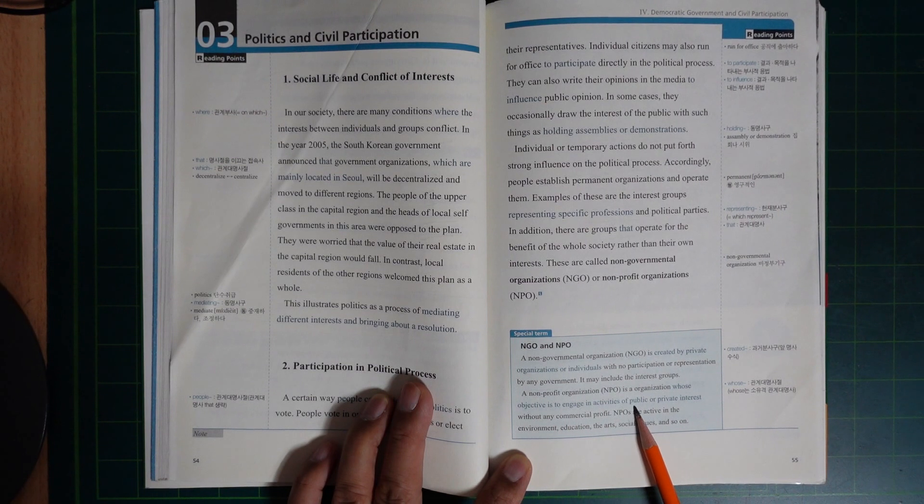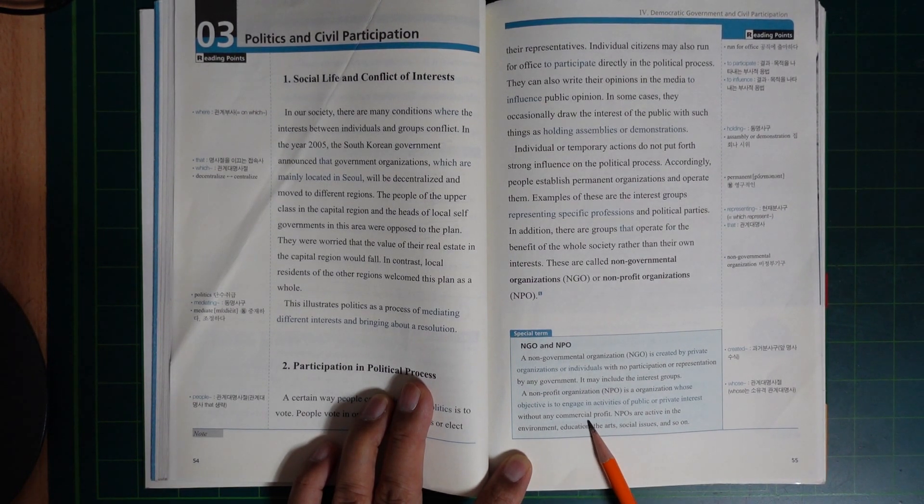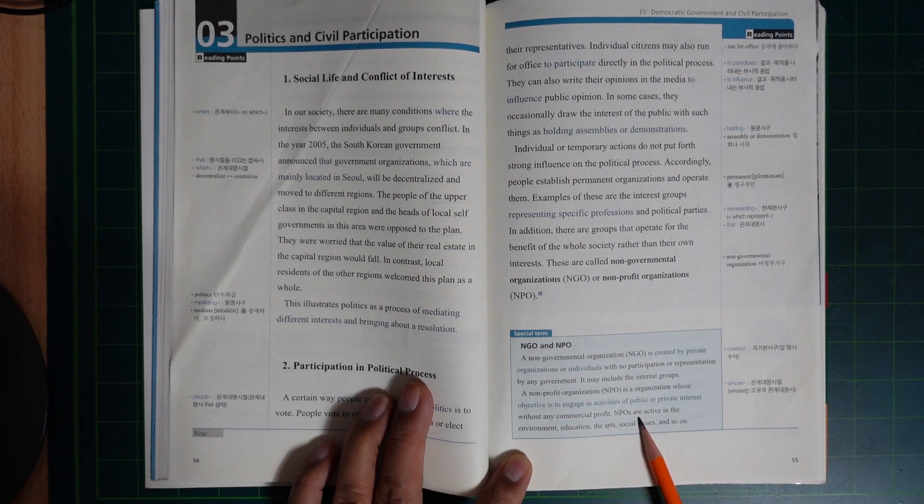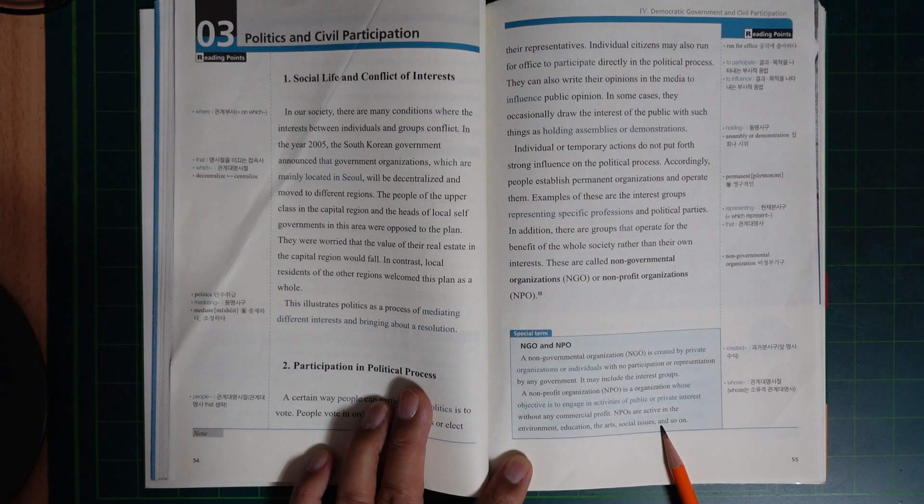A non-profit organization (NPO) is an organization whose objective is to engage in activities of public or private interest without any commercial profit. NPOs are active in the environment, education, art, social issues, and so on.